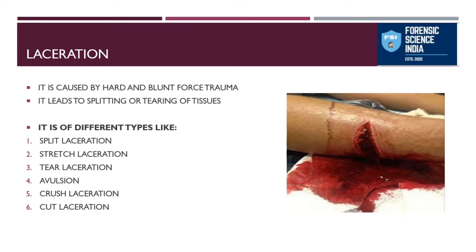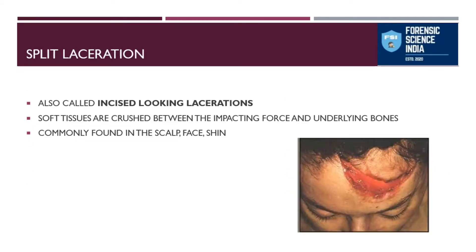Laceration can be classified on different bases: split laceration, stretch laceration, tear laceration, avulsion, crush laceration, and cut laceration. Split laceration is also called incised-looking laceration. It shows a similar pattern to incised wounds, but unlike the clean spindle-shaped incised wounds, split laceration has a coarser appearance — soft tissues are crushed between the impacting force and underlying bones. These are often found in the scalp, face, or shin.